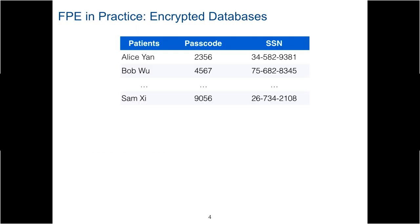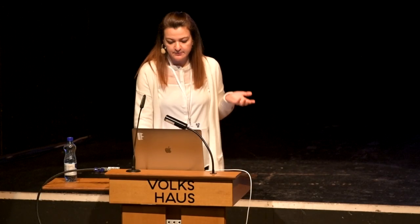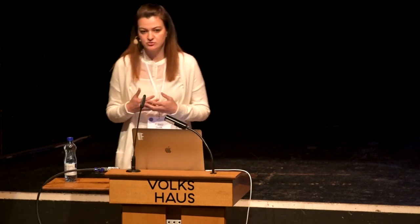I can show you an example of FPE in practice with encrypted databases. Here's a table of patients from hospital records. It includes some sensitive information — the identity of the patients. In order to upgrade the security of this database, we can use FPE to individually encrypt columns with independent secret keys. It gives a transparent way of encryption, meaning we don't need to do any significant schema changes or changes to applications running on top of these databases.